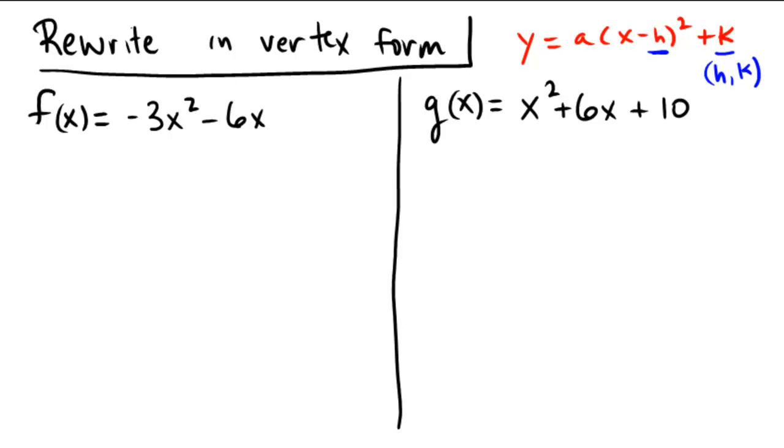So let's try to apply that on the left here. We have f(x) equals negative 3x squared minus 6x. So first stage to rewriting into vertex form is to factor out the coefficient from the x squared. So negative 3 gets pulled out in front and we have x squared plus 2x.